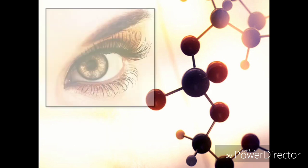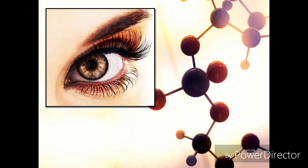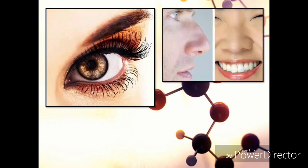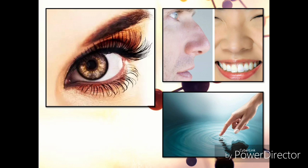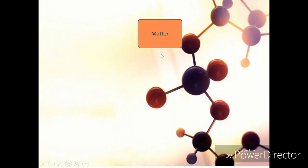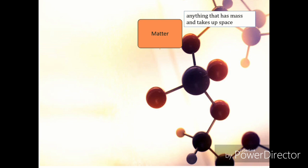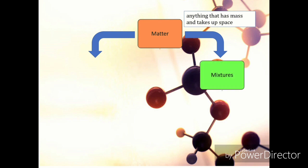Everything that you see using your naked eye, and even those you smell or feel, are classified as matter. Matter is defined as anything that has mass and takes up space, and is made up of combined composition that can be categorized as mixtures or pure substances.